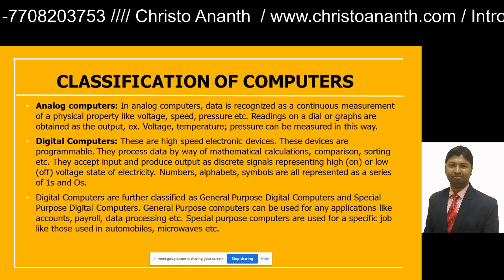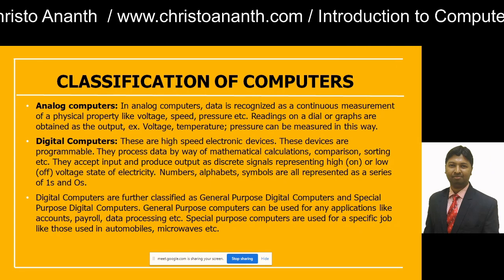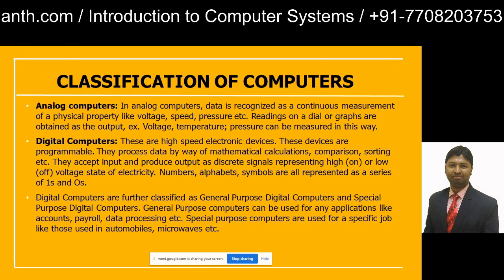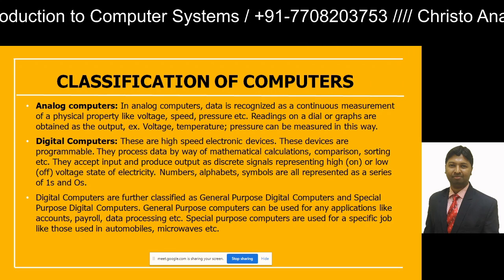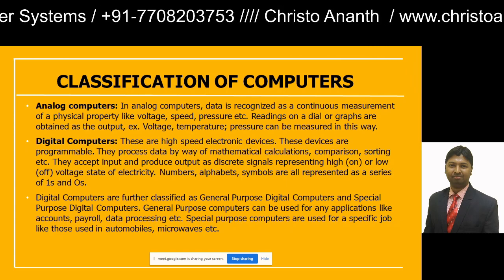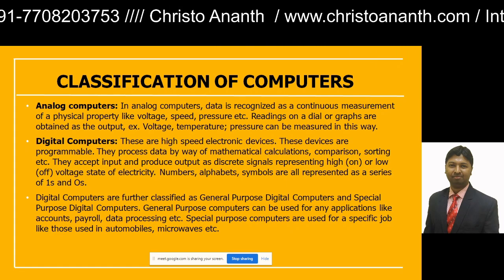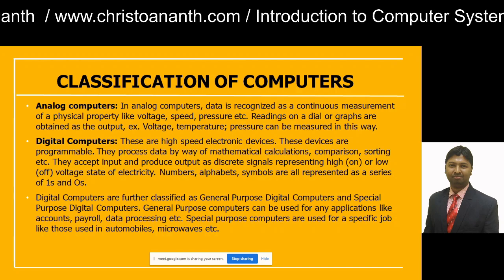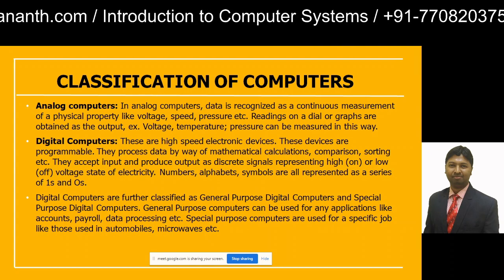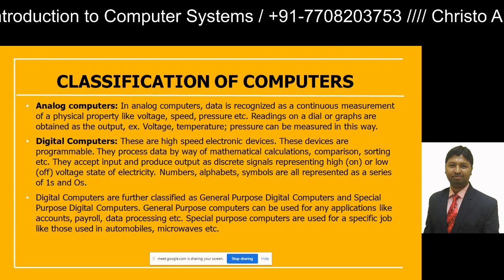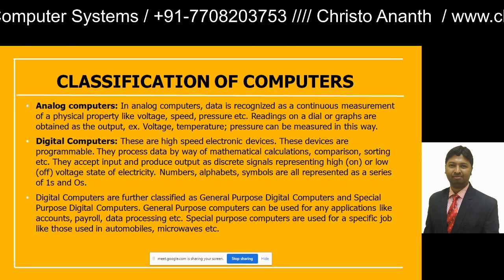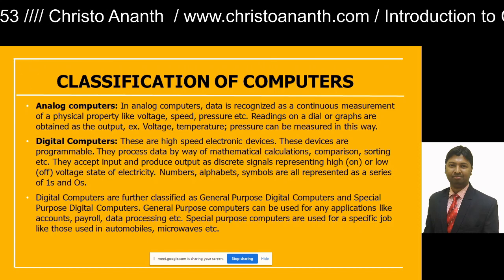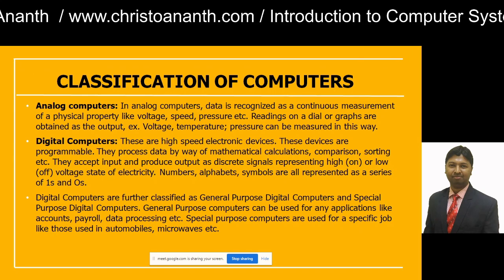In the case of digital computers, it is a very high speed electronic device and a programmable device. You can do mathematical calculations at a very fast speed and compare results — for example, comparing bar charts or pie charts using software tools. You can also sort data in ascending or descending order. The digital computer accepts input and produces output as a discrete signal, either high or low.